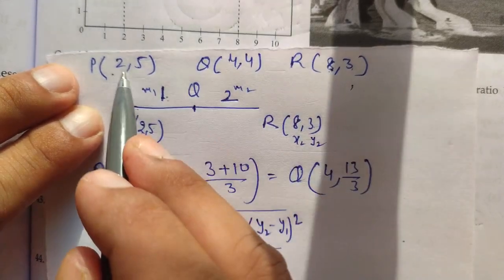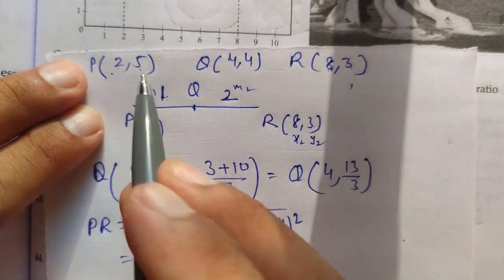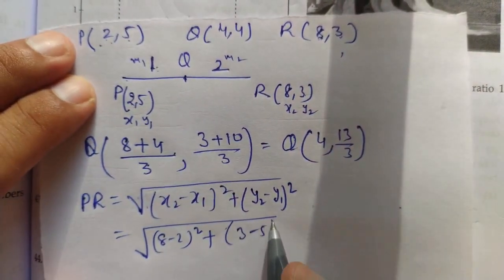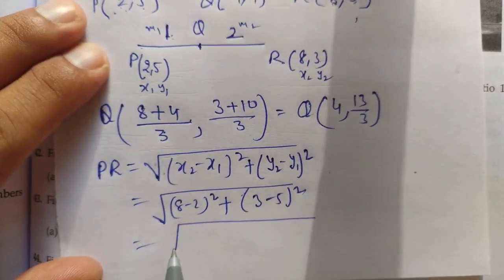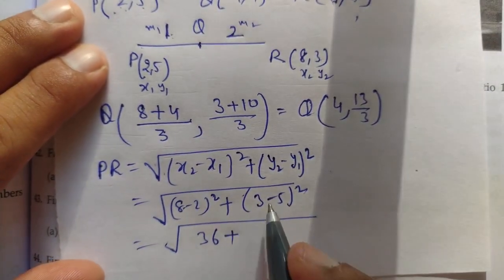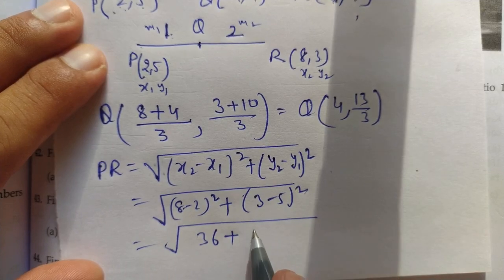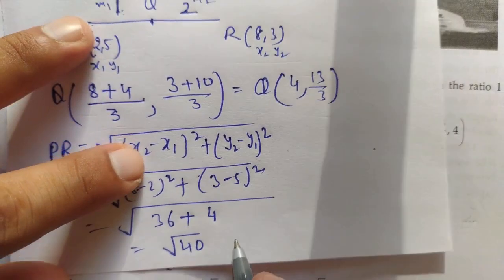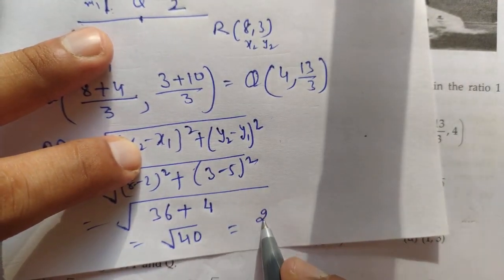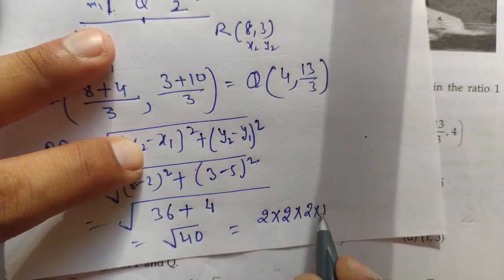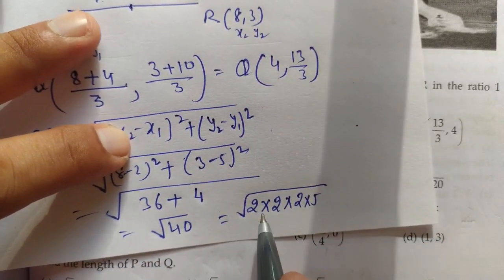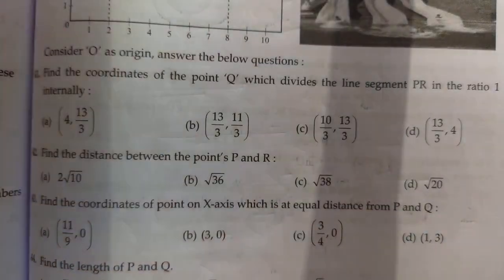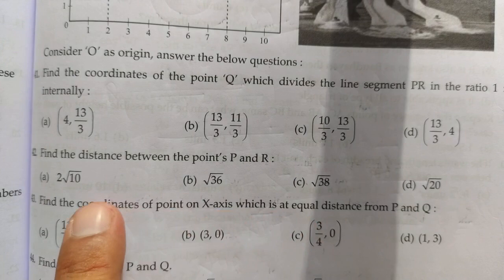Taking P as (x1, y1) = (2, 5) and R as (x2, y2) = (8, 3): PR = √[(8−2)² + (3−5)²] = √[6² + (−2)²] = √[36 + 4] = √40 = 2√10. So the first option is correct.